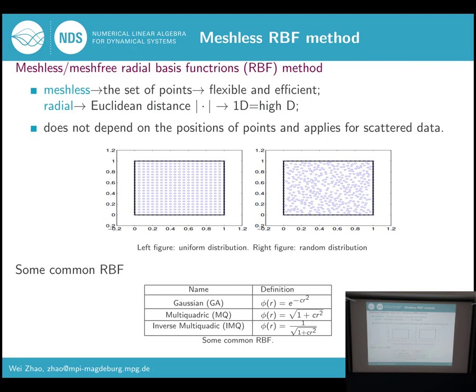In fact, this method only considers the situation of data points. Radial means Euclidean distance, and since distance is always 1D, RBF can be used to solve high-dimensional problems just like solving a 1D case. Moreover, the accuracy of this method does not depend on the position of points — both uniform distribution and random distribution can guarantee good accuracy. The following table gives several common radial basis functions: GA, MQ, and IMQ. I will use these three functions to verify our results in the following talk.